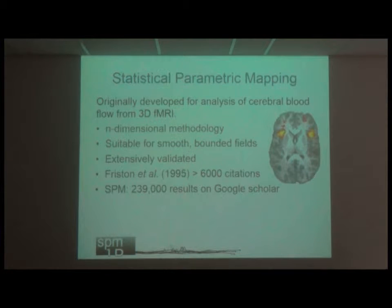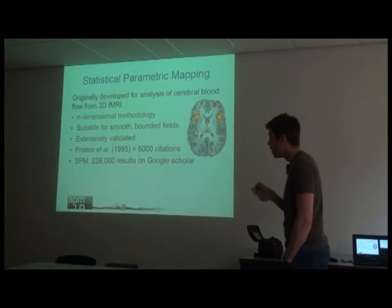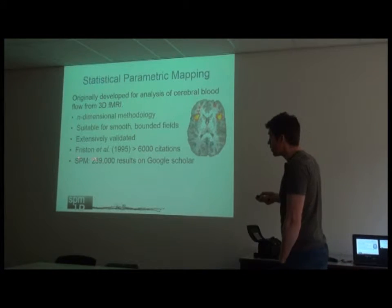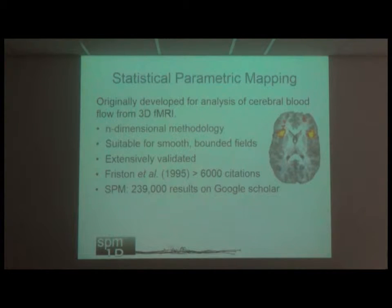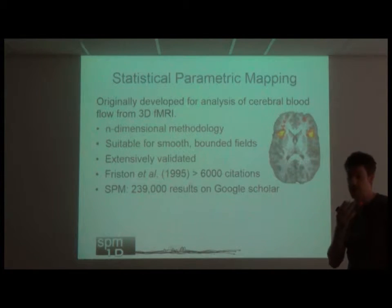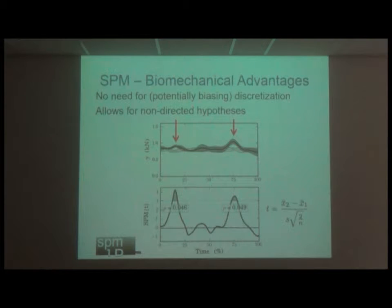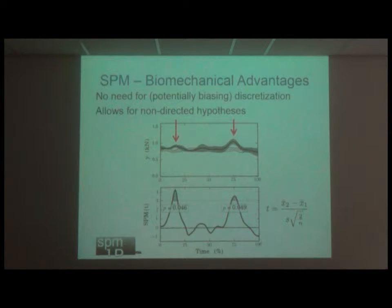Friston's first publication on statistical parametric mapping from 1995 has more than 6,000 citations — it would take a long search to find a single paper with an equal number. If you type 'SPM' into Google, you'll find many results. It is an extensively used technique in other fields, but in biomechanics it is still in its infancy, and we are trying to change that.